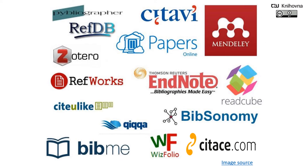I would recommend you to use citation or reference manager software. It's very easy — you just download the bibliographic record from a database or catalog, and you can insert the citation reference and bibliography record into the text with just a few clicks. It also has the advantage that a citation manager can handle multiple styles and you can simply switch to a different citation style. But be careful: even a reference manager can make mistakes, so there is always a need to check the citation carefully. If you want to learn how to use citation managers, watch our next video.